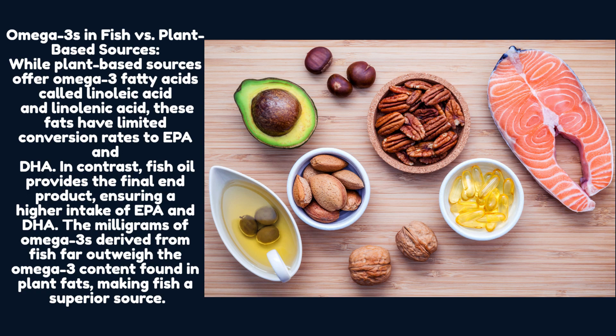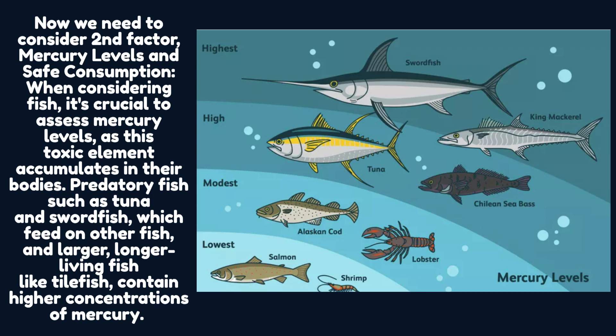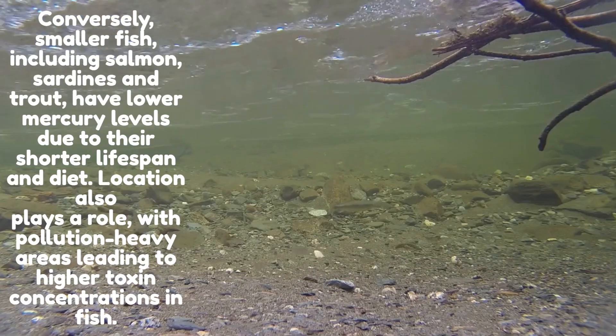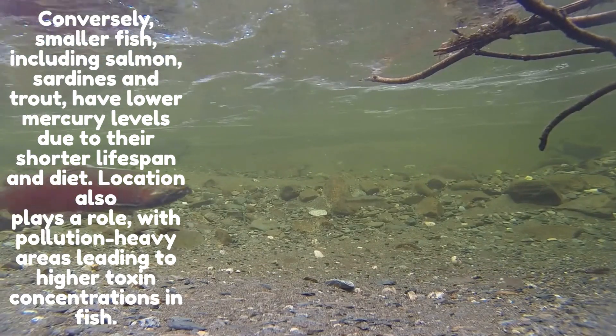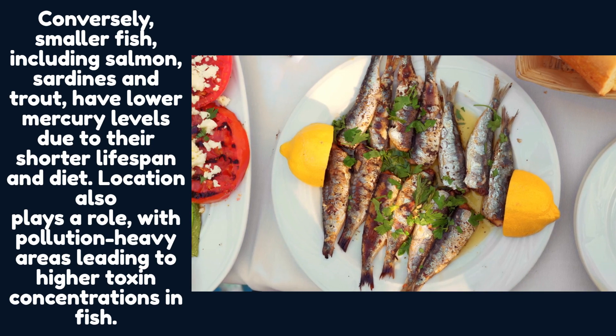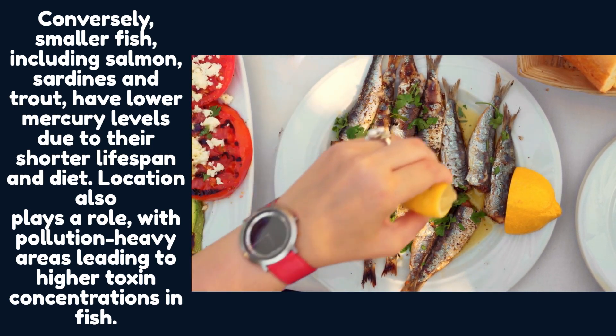The second factor to consider is mercury levels and safe consumption. When considering fish, it's crucial to assess mercury levels, as this toxic element accumulates in their bodies. Predatory fish such as tuna and swordfish, which feed on other fish, and larger, longer-living fish like tilefish contain higher concentrations of mercury. Conversely, smaller fish including salmon, sardines, and trout have lower mercury levels due to their shorter lifespan and diet. Location also plays a role, with pollution-heavy areas leading to higher toxin concentrations in fish.